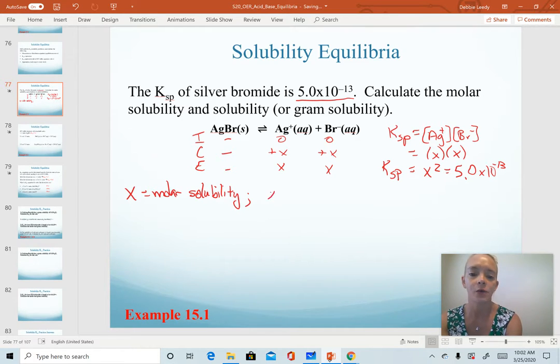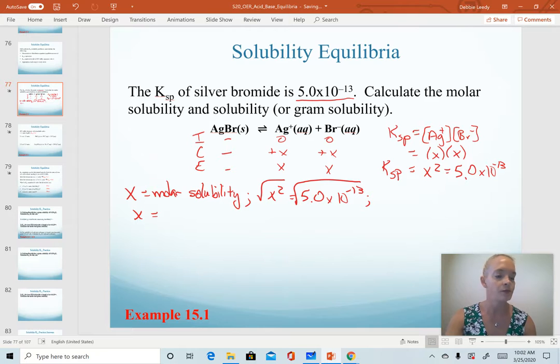In this problem, because we have x squared equal to our Ksp value, we just take the square root of both sides, and therefore our x value would be 7.07107 times 10 to the minus 7.